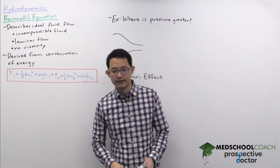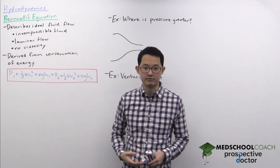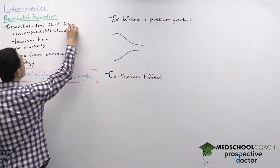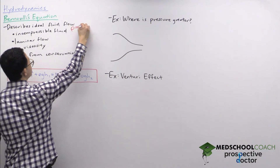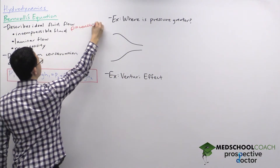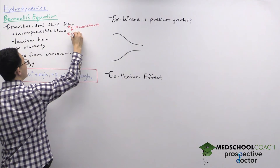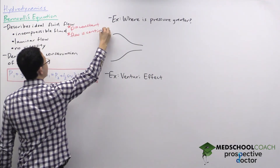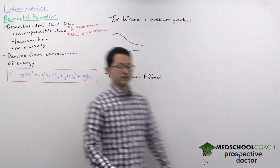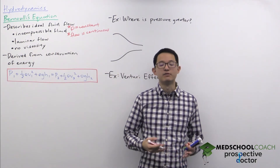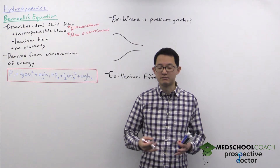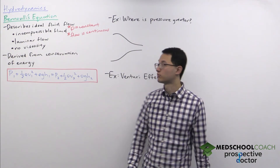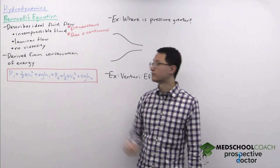The first requirement is that the fluid must be incompressible. If a fluid is incompressible, that means the density of the fluid is constant and the flow is continuous. If you recall from the continuity equation, if you have an incompressible fluid moving through a pipe, the amount of fluid that enters the pipe equals the amount that exits, and the flow rate is the same at both points.